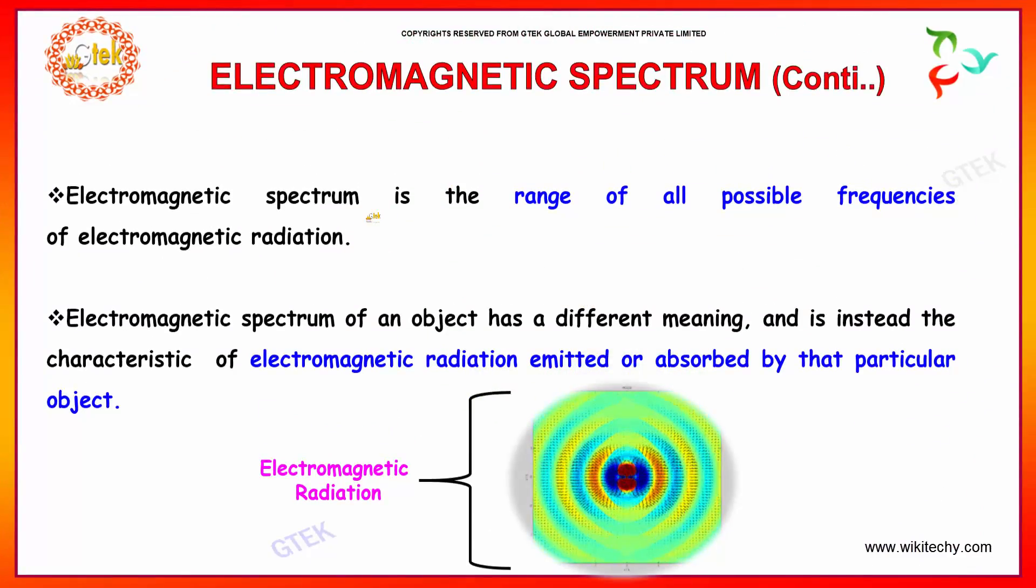The electromagnetic spectrum is a range of all possible frequencies of electromagnetic radiation. The electromagnetic spectrum of an object will have a different meaning—instead, the characteristic electromagnetic radiation emitted or absorbed by that particular object.